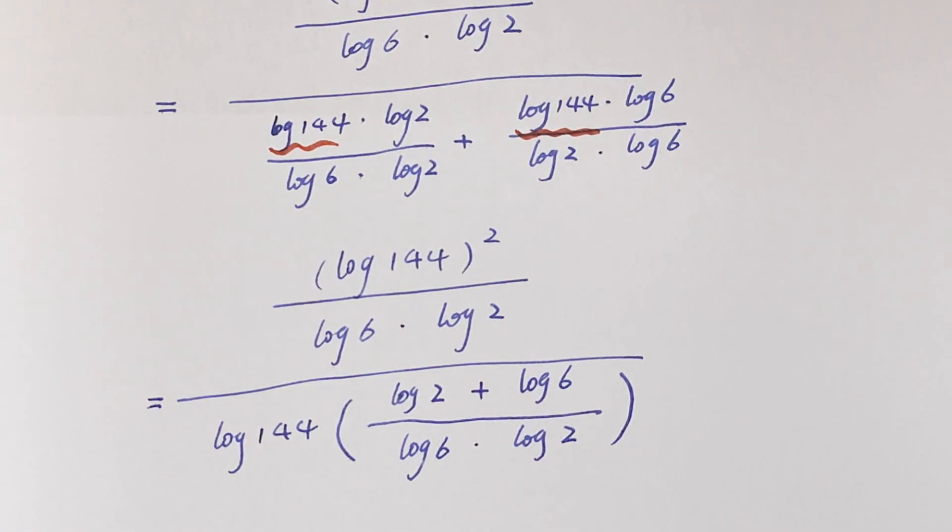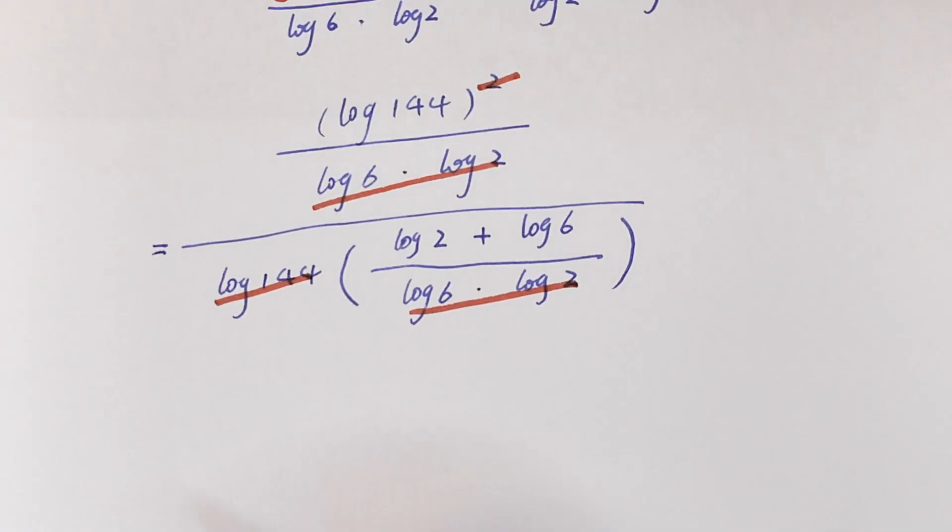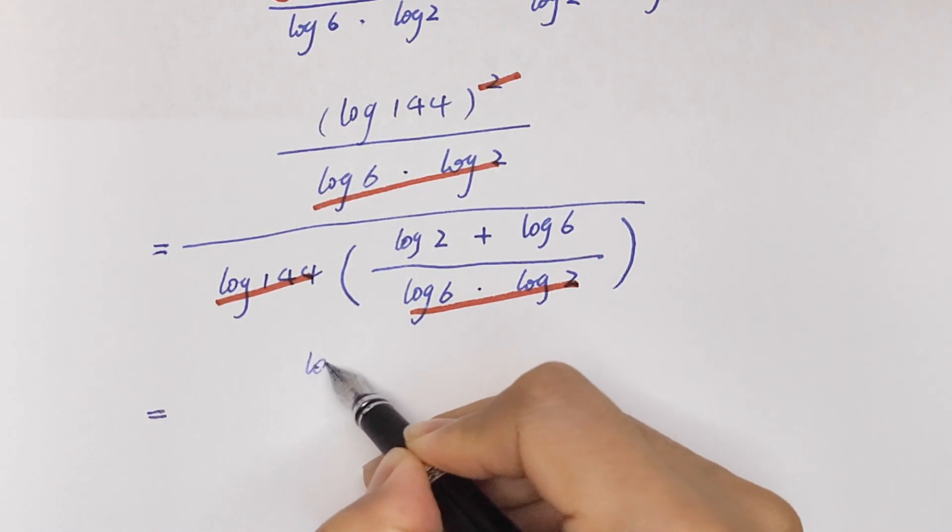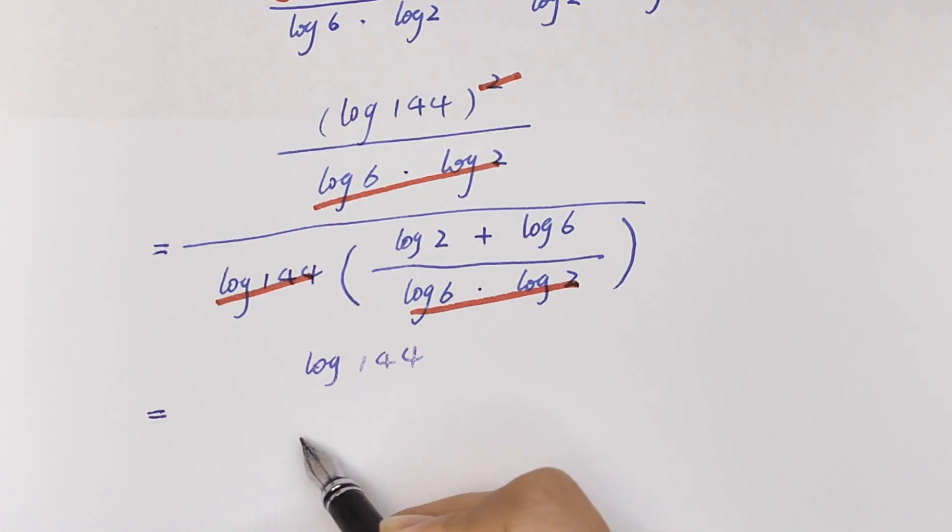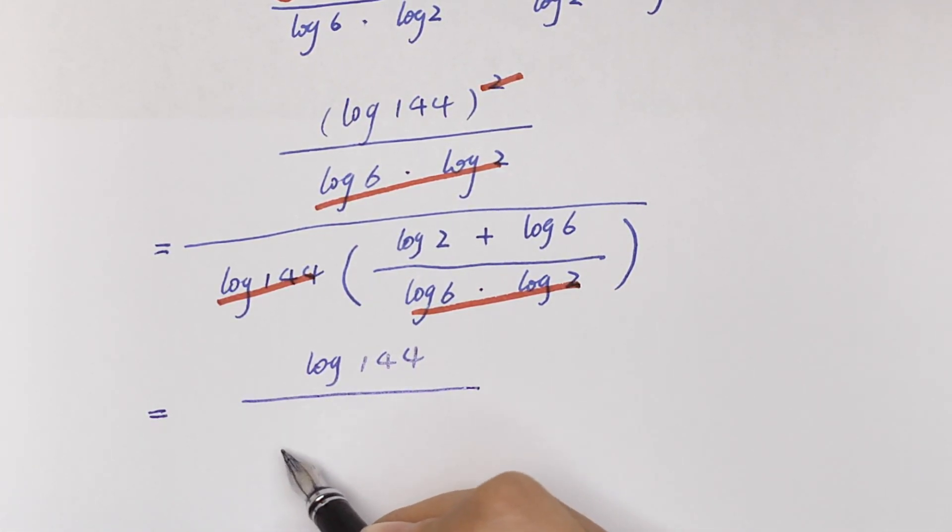Now we can simplify. This will cancel with this, and this will cancel with this. Now we get log 144 over log 2 plus log 6.